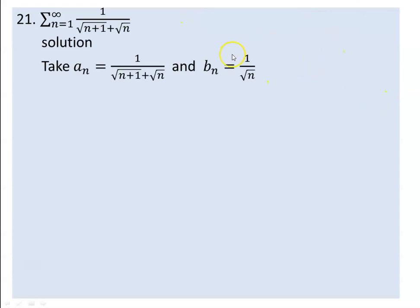The series is divergent. Now, for the limit comparison test, as the conditions require, we need to check that both series are positive — that the terms are positive. Let me check the series 1 over square root of n plus 1 plus square root of n.